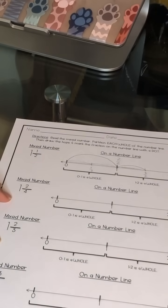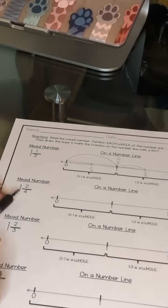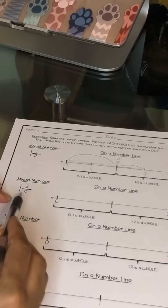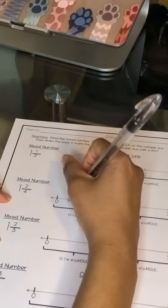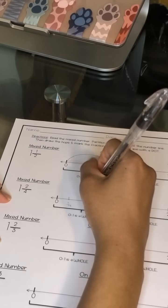Let's look at another one. So this mixed number has one whole and two fourths. That means this number line is broken into fourths.